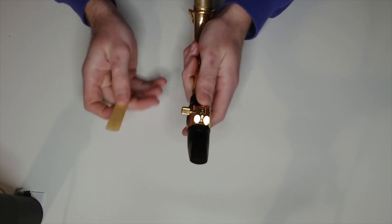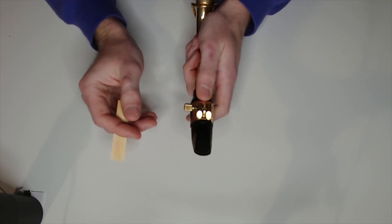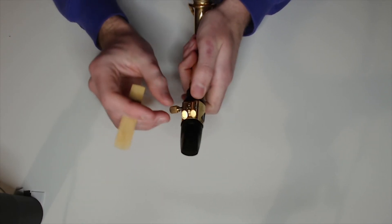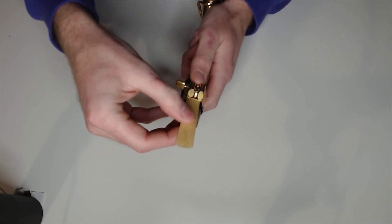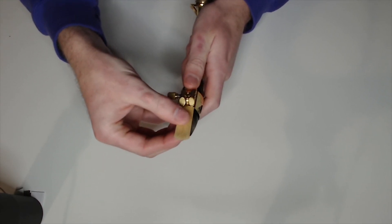Now I move my non-dominant hand up to the ligature so I can push it up a little bit. Then I just slide that fatter end of the reed between the ligature and the mouthpiece.